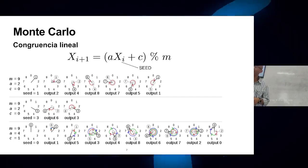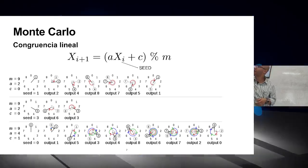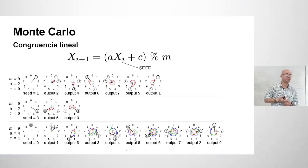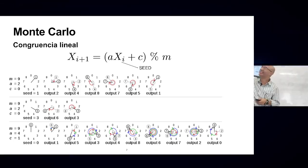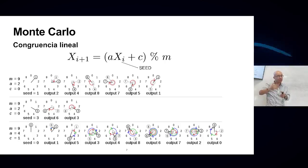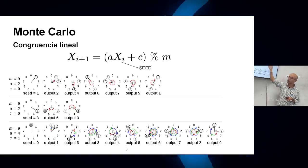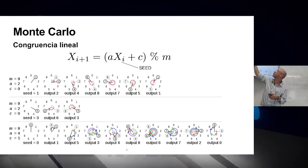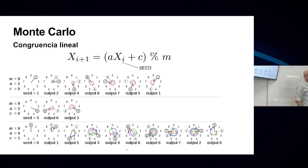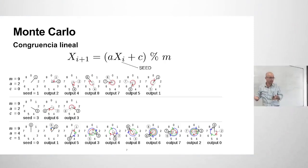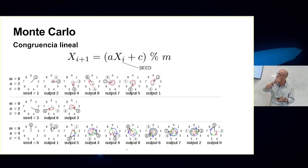Changing the seed also changes the generated chain, but a good random number generator needs a period on the order of 10^32 — generating an enormous number of values before repeating. This short-period example demonstrates why these simple parameters are inadequate for real simulations.